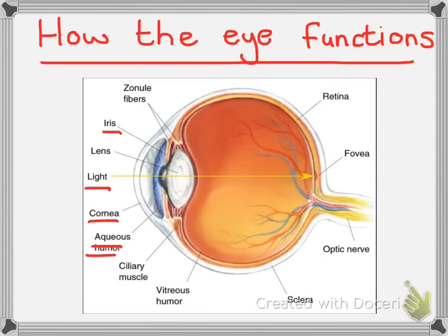Now the pupil is created by the iris, and the iris is a circular muscle that can contract and relax depending on how much light you want to let in.